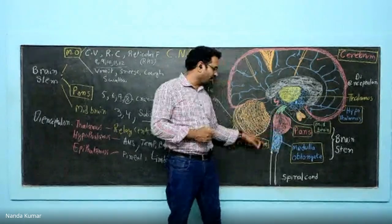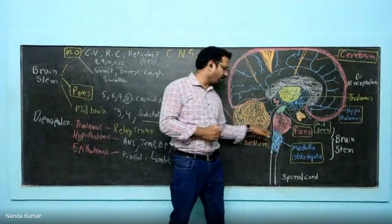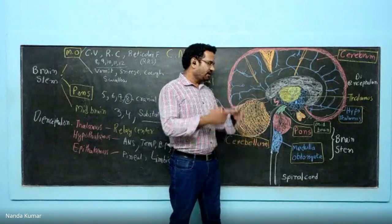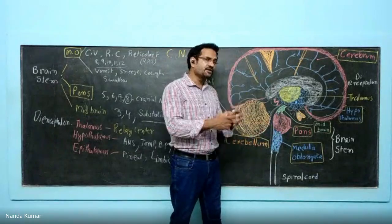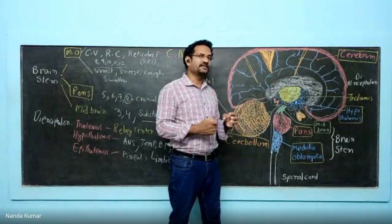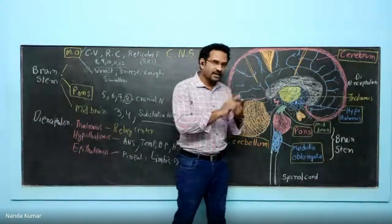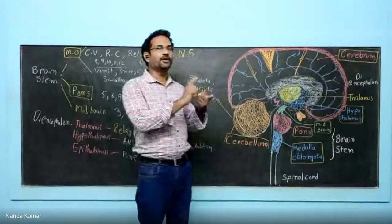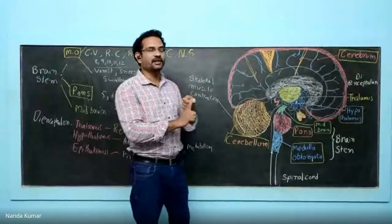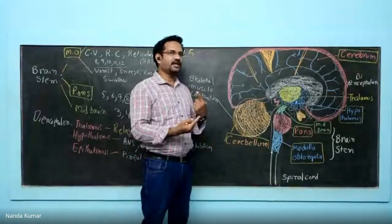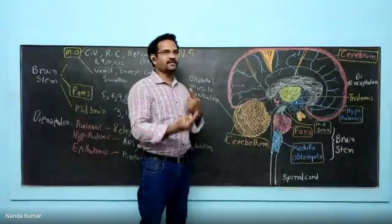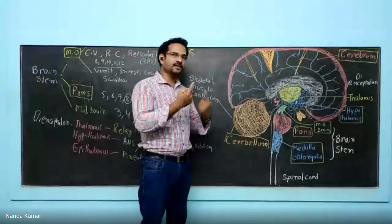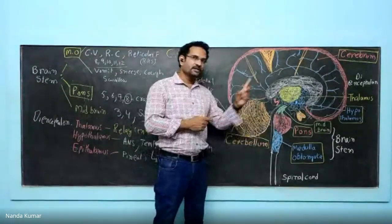Medulla oblongata — because of its oblong shape, it is called medulla oblongata. It has got a lot of controlling centers. The cardiovascular center is there, which will control cardiovascular function: increase in heart rate, decrease in heart rate, blood vessel dilation, blood vessel contraction — everything is under the control of this region.